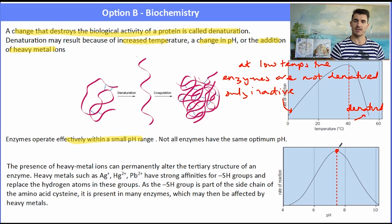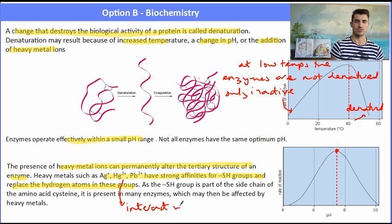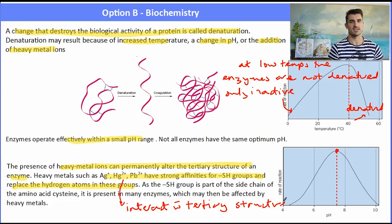Here we have the rate of reaction in pH, and we can see that at extremes of pH, the enzyme is denatured, and it only works at a very specific pH level. If we start to add heavy ions to enzymes or proteins, that starts to alter the structure, because those heavy metal ions have affinities for the SH group, which is part of the cysteine amino acid. And they change the tertiary structure of the protein or the enzyme, which alters the shape.